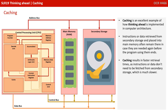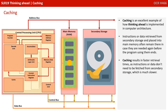Caching is an excellent example of how thinking ahead is actually implemented in computer architecture. Instructions or data retrieved from secondary storage and placed into main memory often remain there in case they're needed again before the program using them ends. Caching results therefore in faster retrieval times, as instructions or data don't need to be fetched from secondary storage, which is much slower.